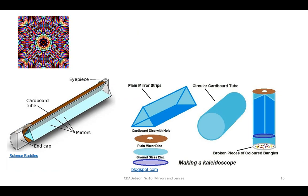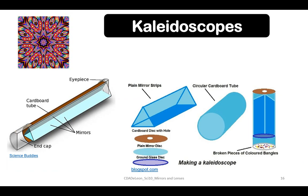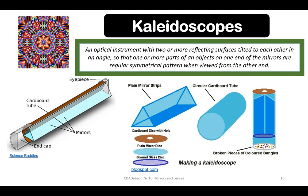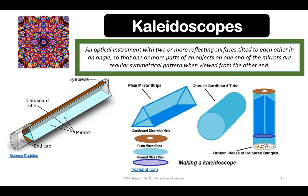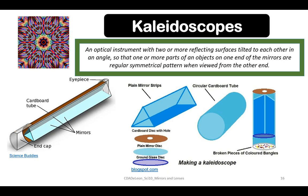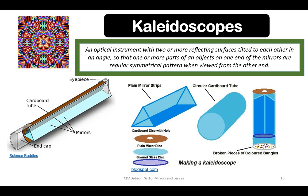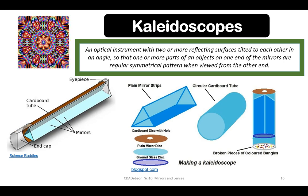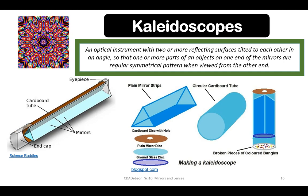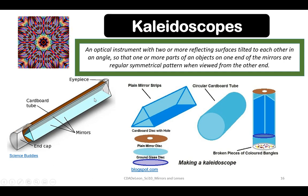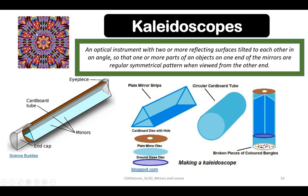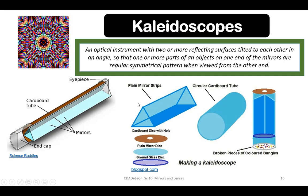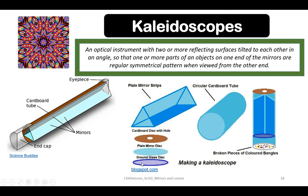Another application of plain mirrors is kaleidoscopes. It is an optical instrument with two or more reflecting surfaces tilted to each other at an angle so that one or more parts of an object on one end of the mirrors are regular symmetrical pattern when viewed from the other end. That's how we make our kaleidoscopes.